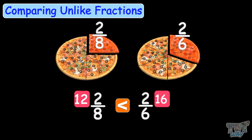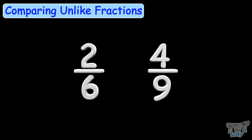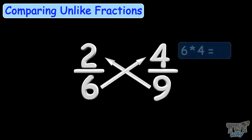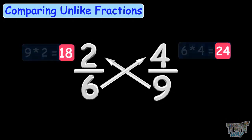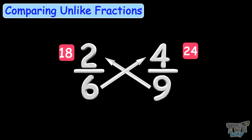Now let's compare some unlike fractions in a quick fashion. Comparing 2 by 6 and 4 by 9: 6 multiplied by 4 is 24, and 9 multiplied by 2 is 18. We get a bigger number on this side, so 4 by 9 is a bigger fraction.